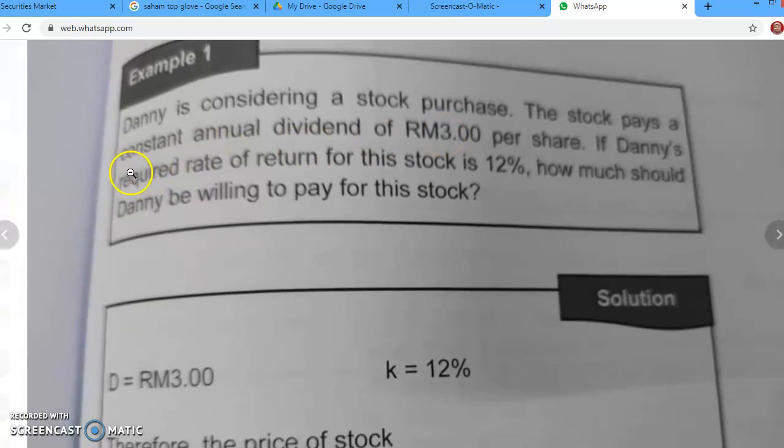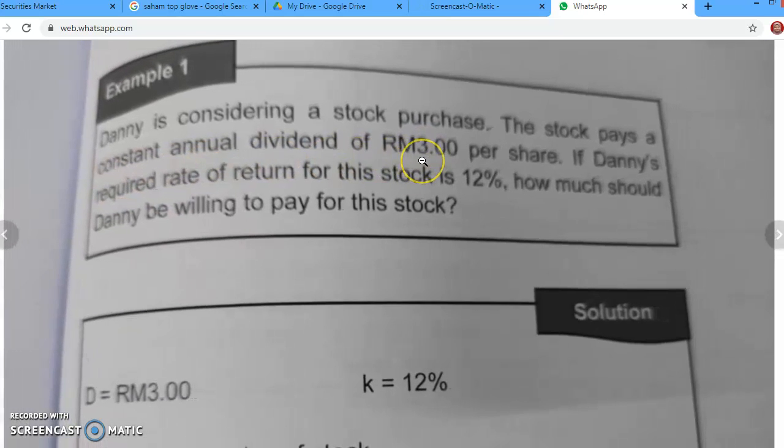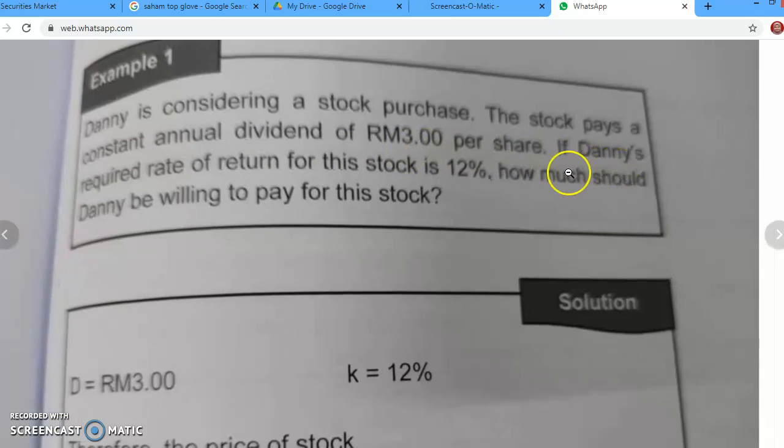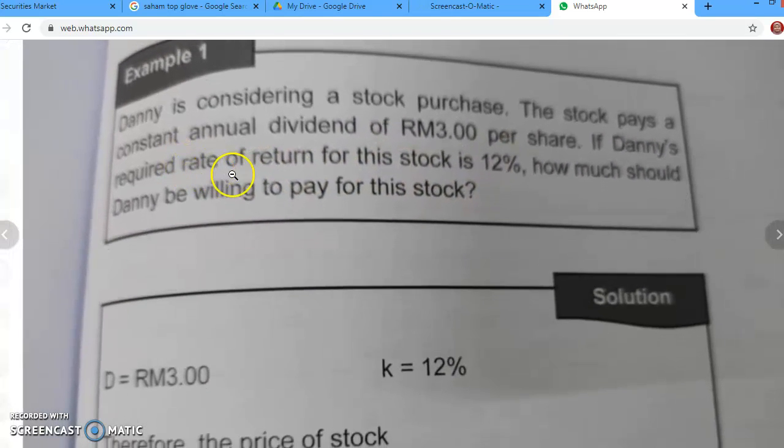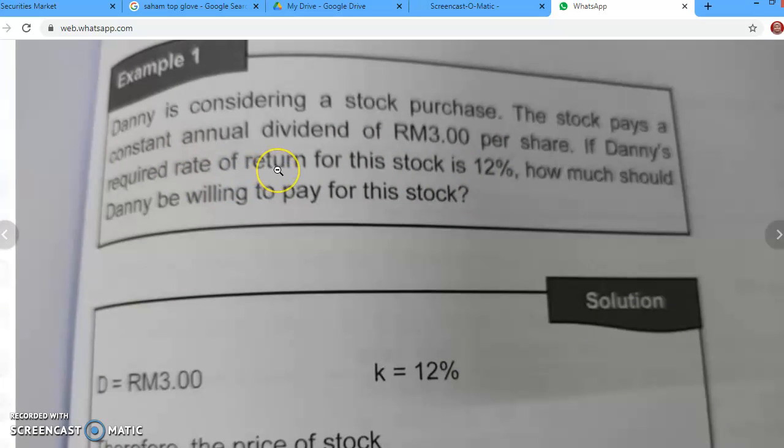Dia pun bagitahu constant annual dividend of RM 3 without any growing at all. If Danny's required rate of return is 12%, so required rate of return like I mentioned earlier adalah K. So this is our K.